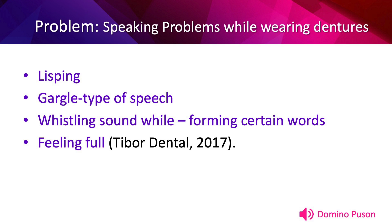The speech problems resulting from wearing dentures include: first, lisping — dentures are a foreign object that occupies space in the mouth, and because of excessive production of saliva, it results in frequent mumbling. Second, gargle-type speech — this is due to excessive salivation which causes dentures to start moving, resulting in gargling when they speak. Third, whistling sound while forming certain words — this is due to the front part of the dentures being positioned differently from the original teeth, which causes whistling sounds that come along with lisping. And lastly, feeling full — a feeling of fullness in the mouth that happens when wearing dentures for the first time. Having experienced these problems can lead to nutritional problems for the older adult because they cannot communicate the food they want or any issues they have with the food they are consuming.